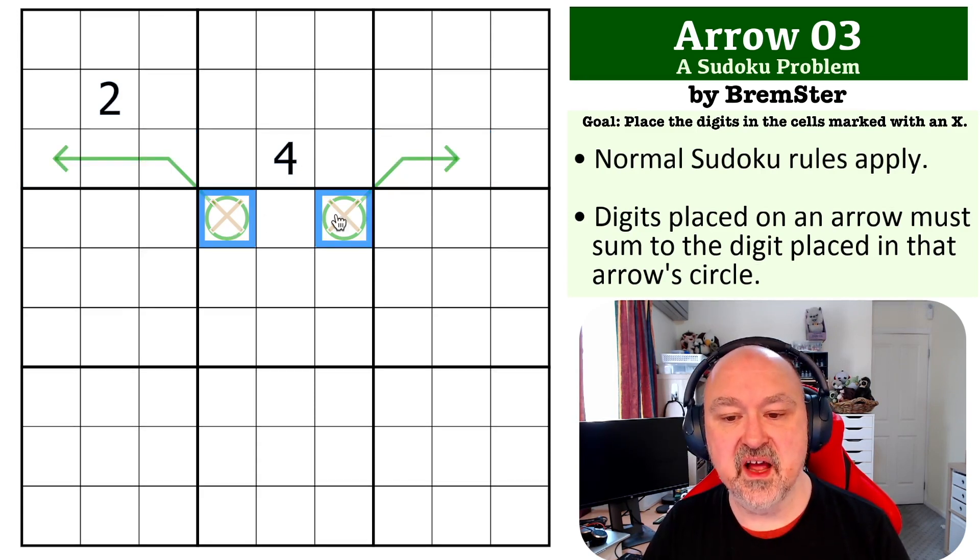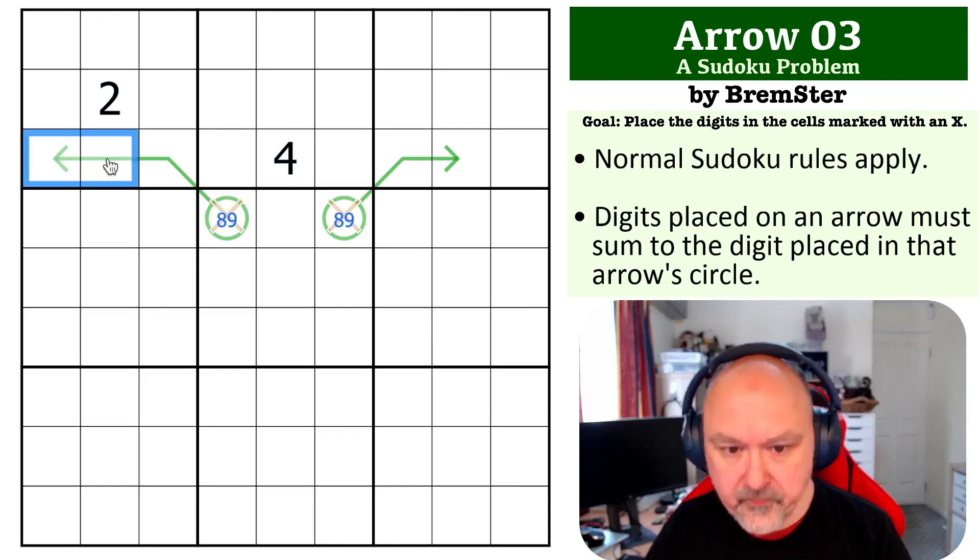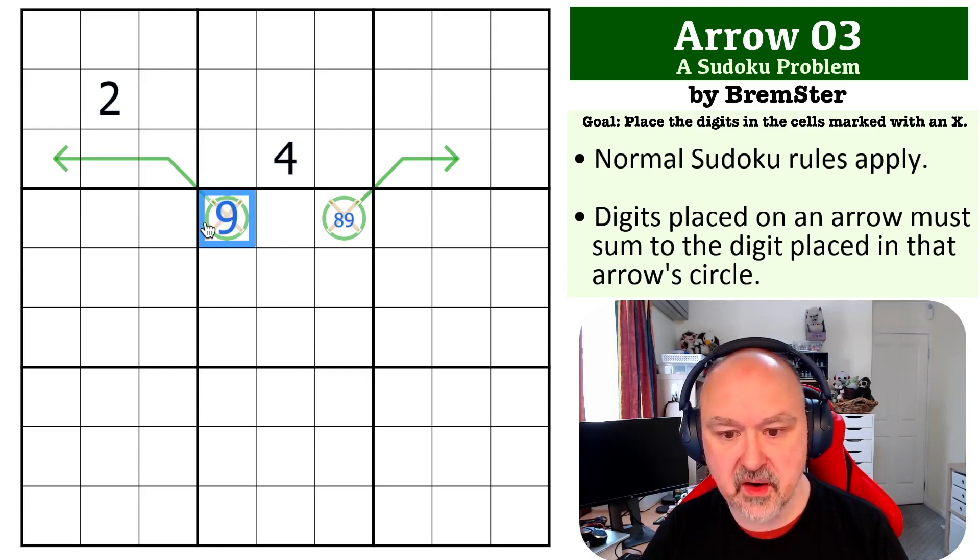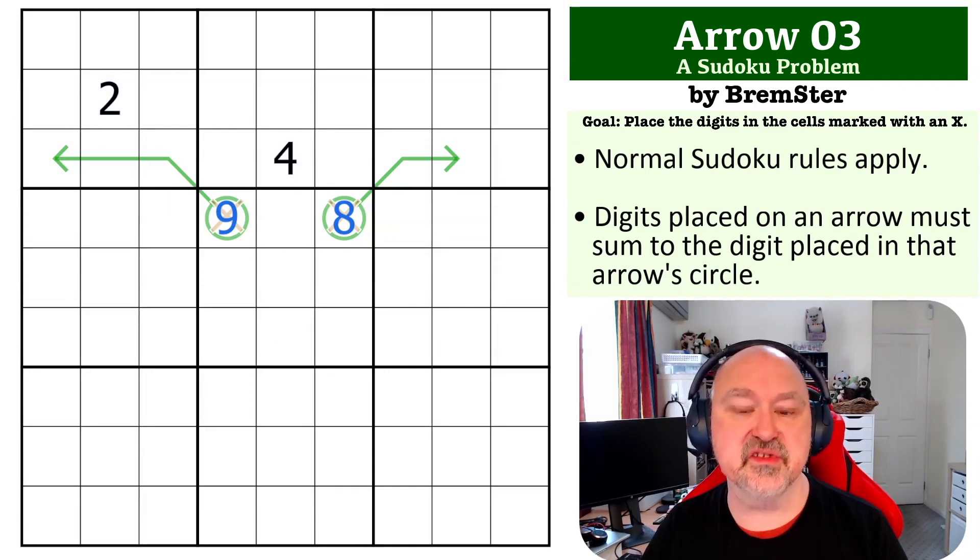So seventeen, and the only way you can do seventeen in Sudoku digits is with eight and nine. But we can also look at what is the minimum that these digits can be. These can't contain a two or a four, so the minimum is one, three, five. One, three, five sums to nine, so that must be the nine, that must be the eight, and that is the solution to the problem.